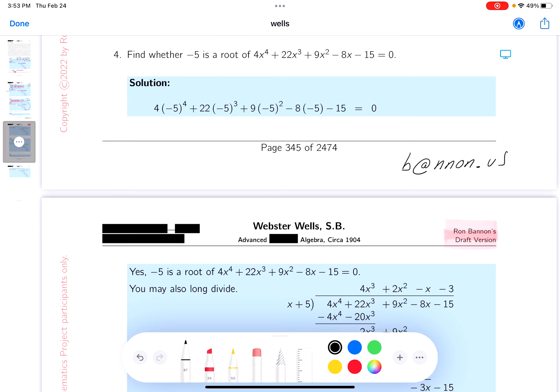So they're saying, is minus five a root? And the answer's either yes or no. So if it's a root, it would satisfy the equation. What does that mean? You'd plug in minus five over here, and it should give you zero. So that's all I did over here. I took minus five, and I plugged it in.